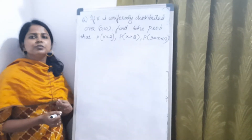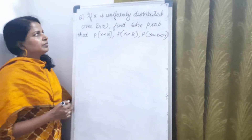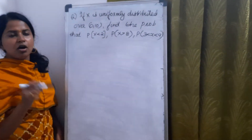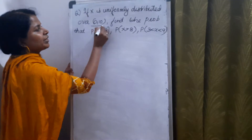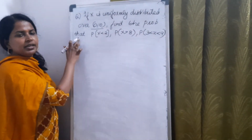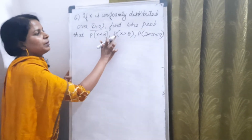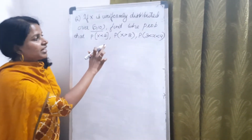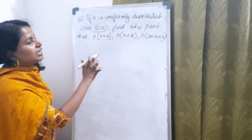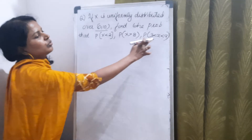Next, we have a problem from uniform distribution. If X is uniformly distributed over 0 to 10, find the probability: P(X < 2), then P(X > 8), and P(3 ≤ X ≤ 9).